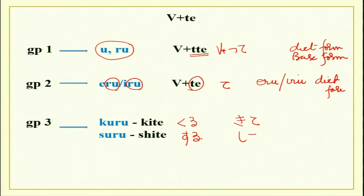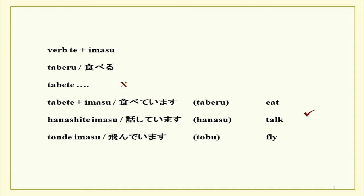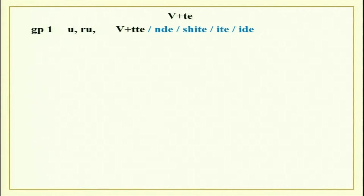The verb in te form itself has no meaning — it does not show or say anything on its own. Only after adding imasu to it does it become continuous tense. Do not end at te only; imasu has to be added. The general pattern for group one to make te form is verb plus tte — the double sound. There are also irregular verbs in group one which we will cover in the next slide.